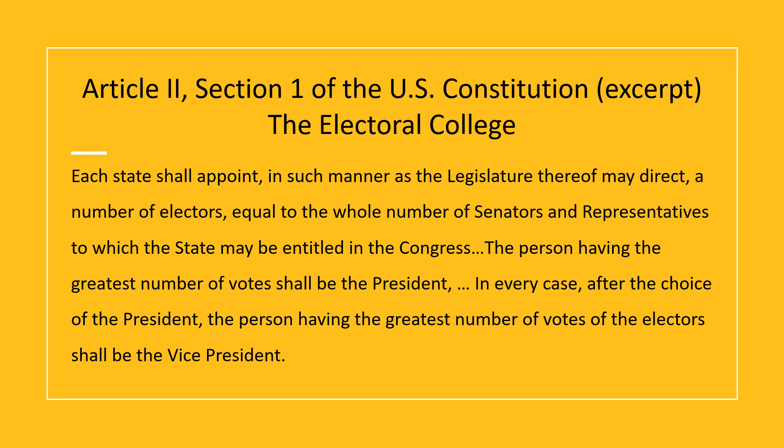How many electors? The number of electors is equal to the whole number of senators and representatives to which the state may be entitled in the Congress. So we know that every state, regardless of size, is entitled to at least three members of Congress: two U.S. Senators per state regardless of size, and one representative per state also regardless of size. This means that some small states that have fewer people living in them than a typically sized congressional district are entitled to one representative because congressional districts do not cross state lines.